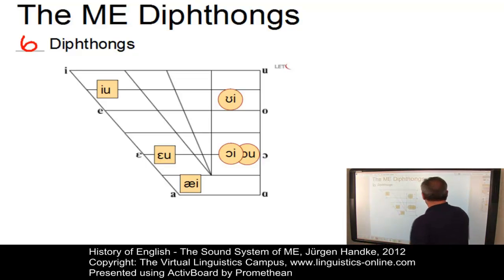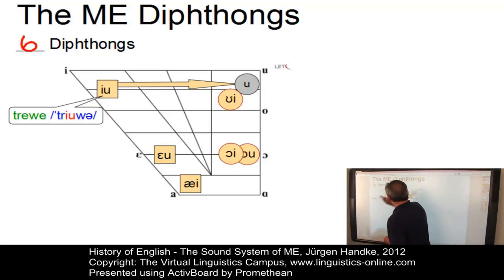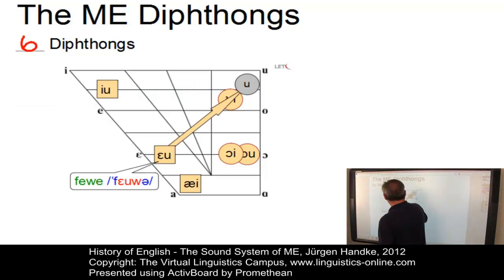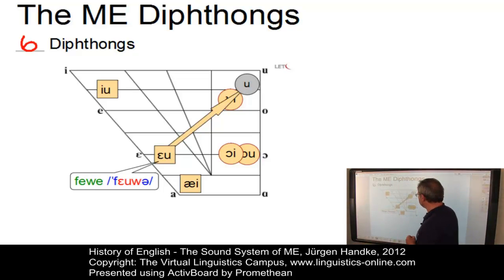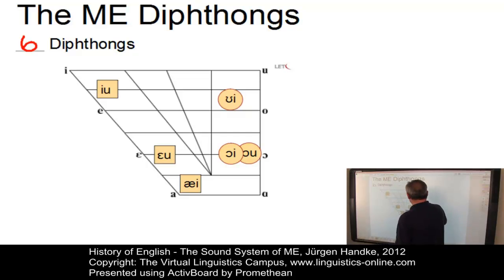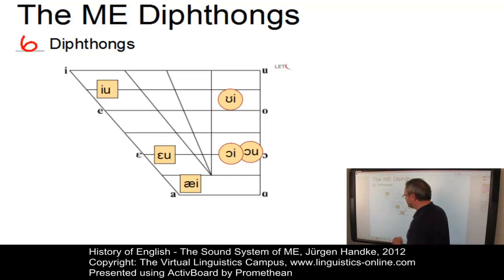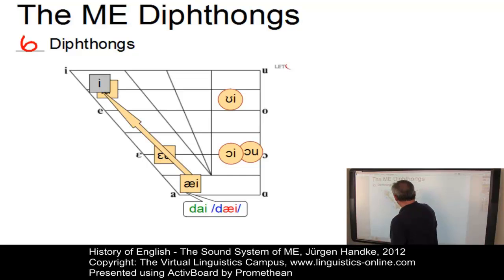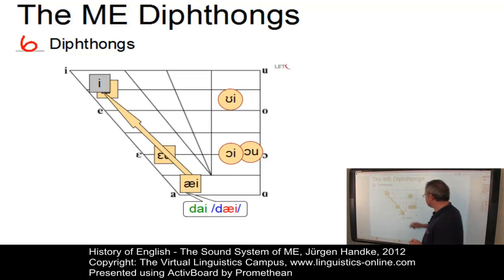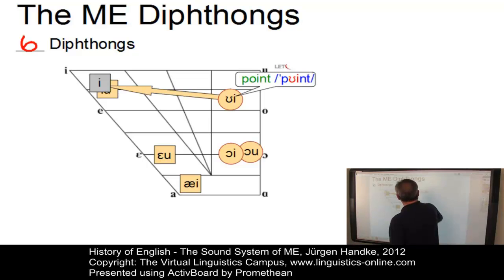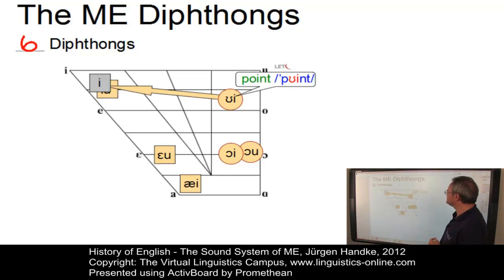Here are the diphthongs. Starting with the back upgliding ones: /ɛu/ as in 'triuwe', /eu/ as in 'fewe', present-day English 'few', and /ou/ as in 'blowe', present-day English 'blow'. Now the front upgliding ones: /ei/ as in 'day', present-day English 'day'; /oi/ as in Middle English 'joie', present-day English 'joy'; and /ui/ as in 'point', present-day English 'point'.